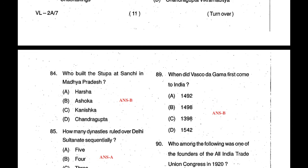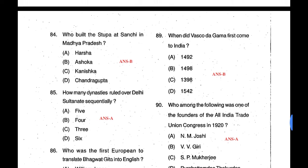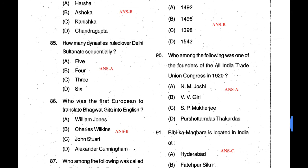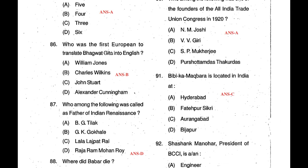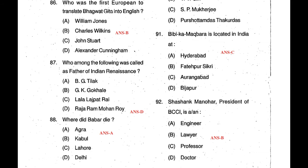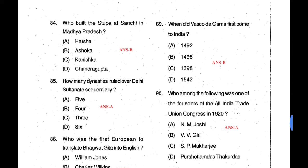Question 85: How many dynasties ruled over the Delhi Sultanate sequentially? Answer is A — five sultanates. Question 86: Who was the first European to translate the Bhagavad Gita into English? That is Charles Wilkins — correct answer. Question 87: Who among the following was called the father of Indian renaissance? The father of Indian renaissance is Raja Ram Mohan Roy. He also abolished the practice of Sati and was the founder of Brahma Samaj.